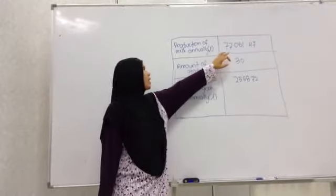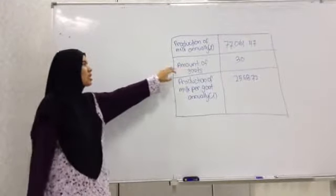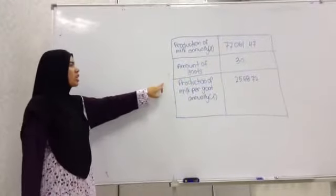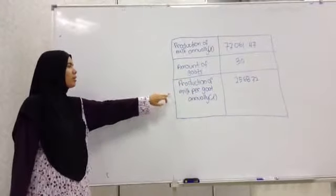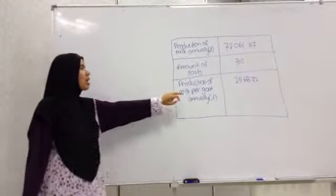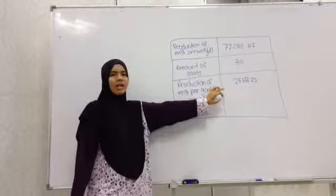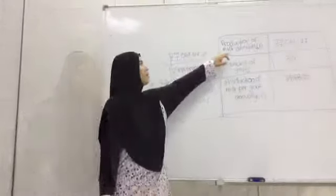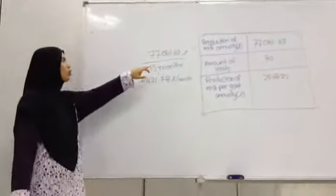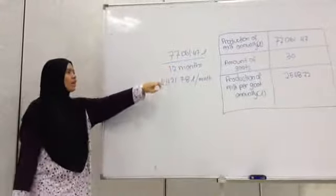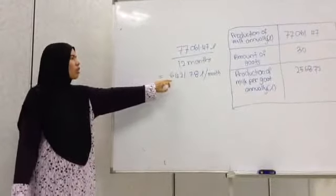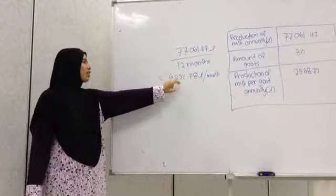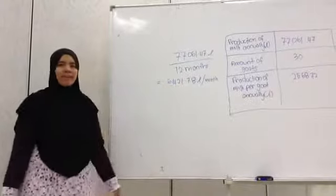The production number is 77,061,547. The amount of goats is 30. The production of water per goat annually is 2,568.72 liters. Dividing annually into three months, we get 6,421.78 liters per month.